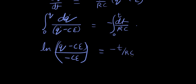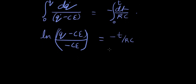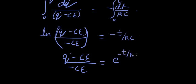Now if we take the anti-log, what do we get? q minus ce over minus ce equals e power minus t over rc. We're just taking the anti-log here.